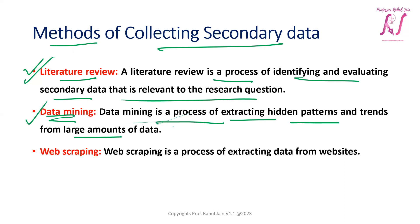Another method is web scraping. Web scraping is a process of extracting data from websites — how easily, efficiently, and accurately you extract the relevant data. That is the process of web scraping. So these are some of the methods of collecting secondary data.